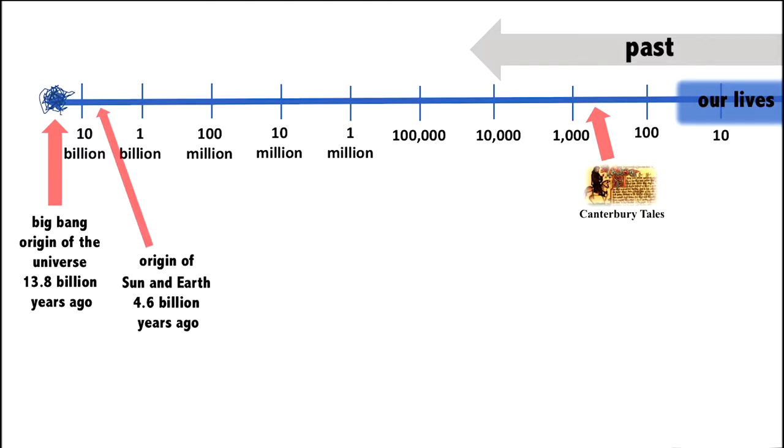And then we have the origin of the Sun and Earth, 4.6 billion years ago. And what we're most interested in is the origin of life on our Earth, about four billion years ago. So this logarithmic timescale really gives us a large dynamic range to arrange things that happened in the past.